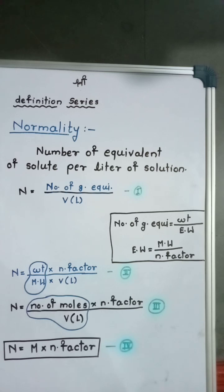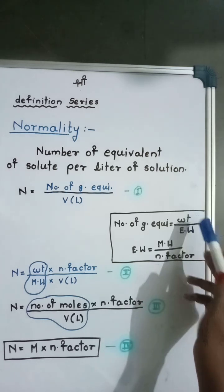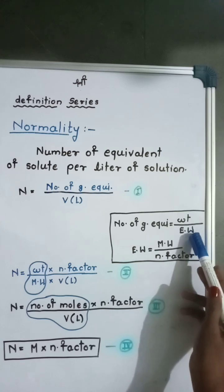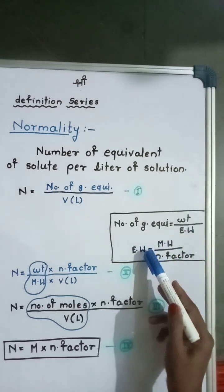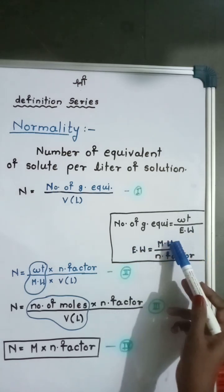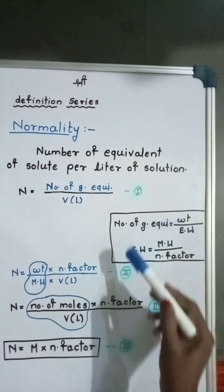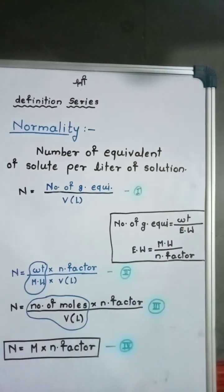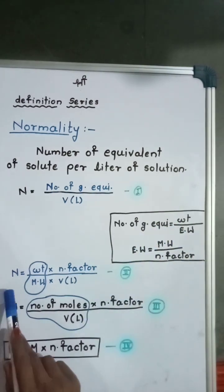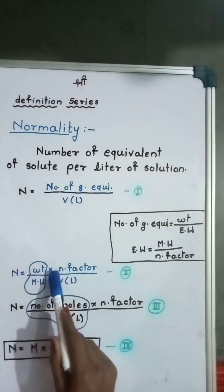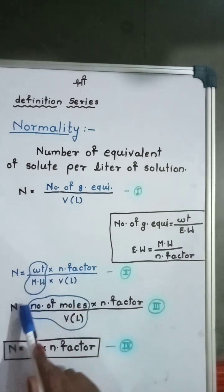Here, the number of gram equivalents is nothing but the weight of solute divided by equivalent weight. Equivalent weight is equal to molecular weight divided by n-factor. By rearranging those formulas, the formula for normality becomes: weight multiplied by n-factor divided by molecular weight multiplied by volume in liters.